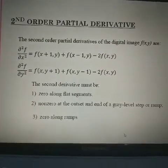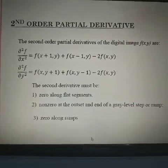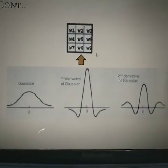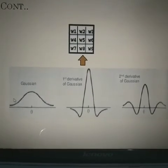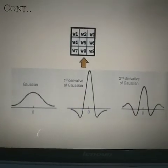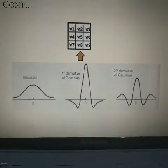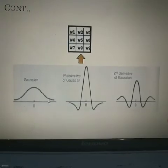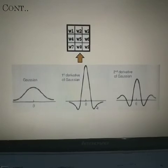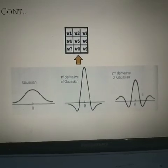The second derivative must be zero along flat segments, nonzero at the onset and end of a gray-level step or ramp and at edges, and zero along the ramps. Here we have examples showing the first and second order derivative masks. After applying the first derivative, the image looks like this, and the mask for the second derivative looks like this.